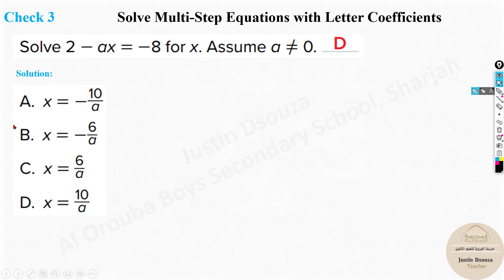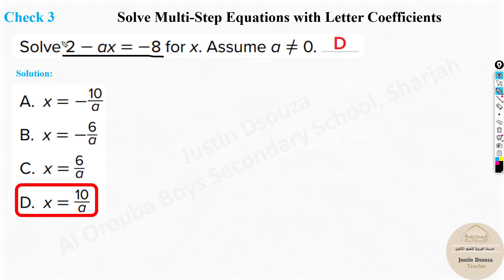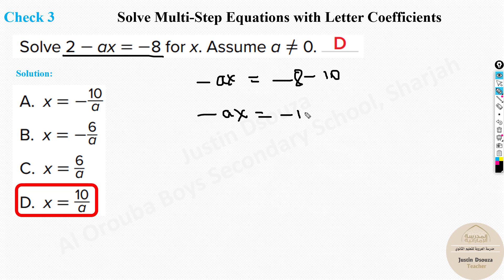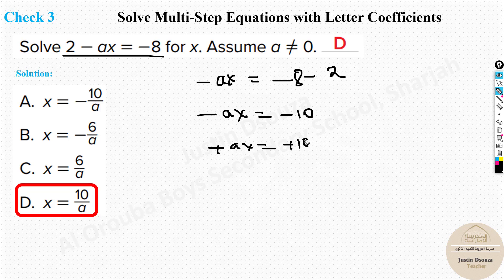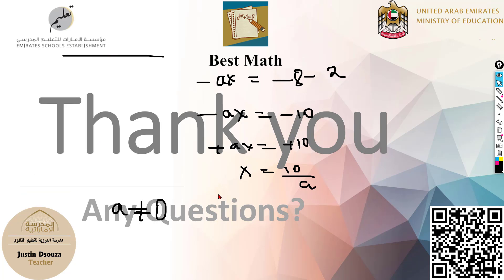For another example of this type, the answer is option D: x = 10/a. To solve: take 2 to the other side, giving -ax = -2 - 10, so -ax = -10 — wait, it's minus 2. Subtract 2 from both sides: -ax = -10. Multiply both sides by -1: ax = 10. Divide by a: x = 10/a. Remember a cannot equal 0.